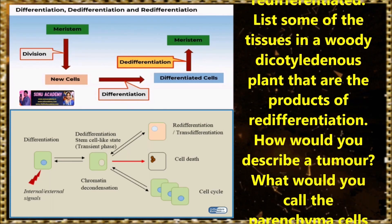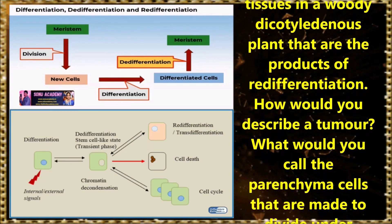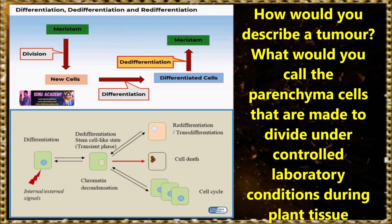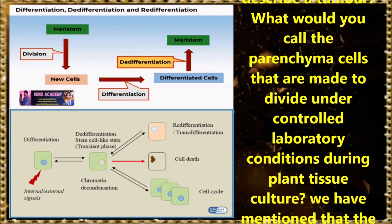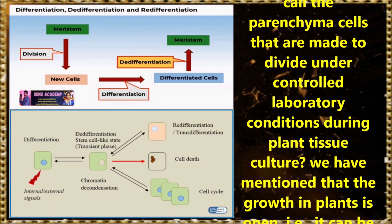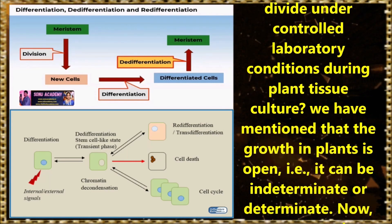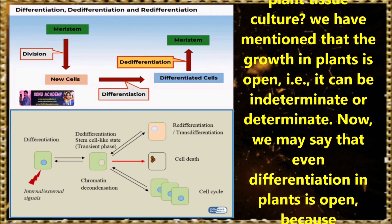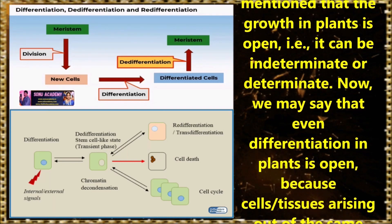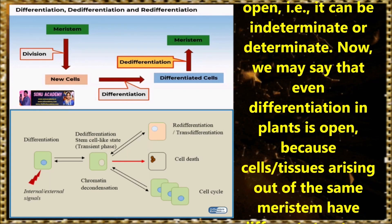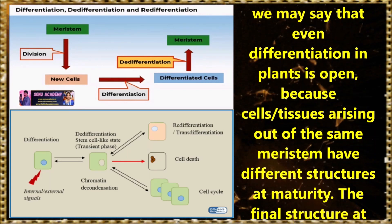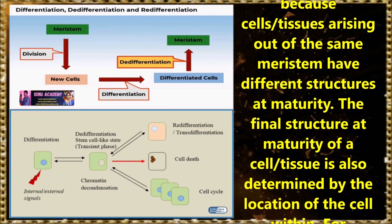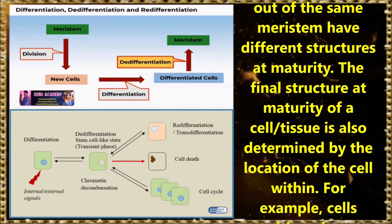List some of these tissues in a woody dicotyledonous plant that are products of re-differentiation. How would you describe a tumor? What would you call the parenchyma cells that are made to divide under controlled laboratory conditions during plant tissue culture? We have mentioned that growth in plants is open — that is, it can be indeterminate or determinate. How may we say the event of differentiation in plants is open?